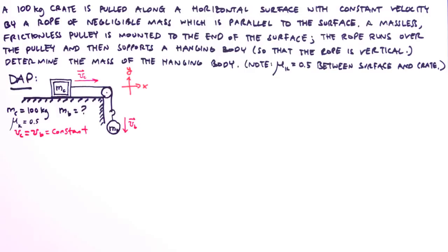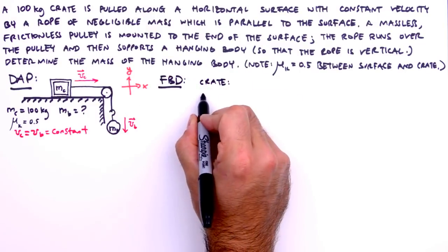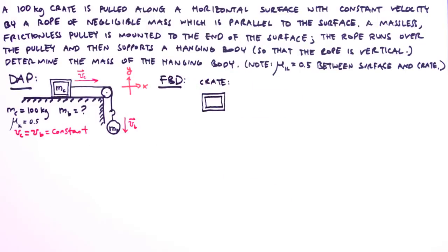Okay, we've got forces at play here, which means it's time for, you guessed it, a free body diagram. Since our two bodies are connected in some fashion, we'll need an FBD for each of them. First, the crate.